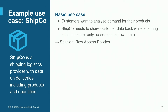Let's consider ShipCo — a shipping company that helps their customers ship products around the world. They receive delivery orders on behalf of their customers' consumers, fulfill these deliveries, and keep track of all delivery data. So they sit on a wealth of sensitive data showing what products are being shipped, how much, and when. In the basic use case, ShipCo's customers want to understand patterns in their own data. ShipCo can easily do this by partitioning their data with access policies — customer A gets customer A's data, customer B gets customer B's data. Super simple.